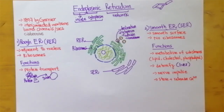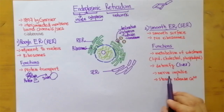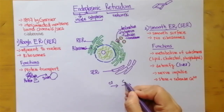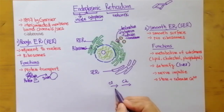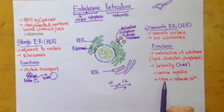The smooth endoplasmic reticulum present in the cells of the liver detoxifies harmful substances that enter the body, protecting it from their harmful effects. Smooth endoplasmic reticulum is also involved in nerve impulses in muscles and neuron cells. For example, a signal sent from cell one to cell two — the smooth endoplasmic reticulum helps send the signal from one cell to another. Without it, nerve impulses cannot travel between cells.